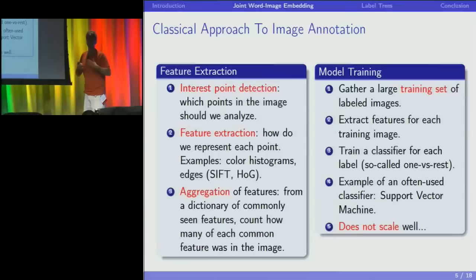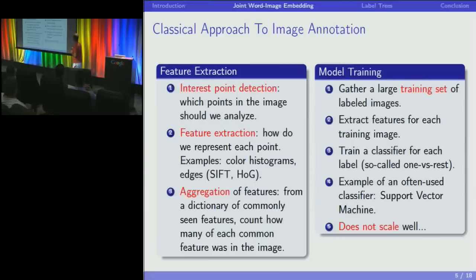Once feature extraction is done, you transform that into a decision — is this a car? Most people train a classifier using a training set of labeled images. They'll extract features and train a support vector machine for each class: one for car, one for bicycle, etc. That's fine for 20 classes, but it doesn't scale to 100,000 classes.